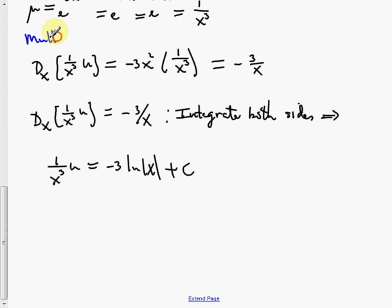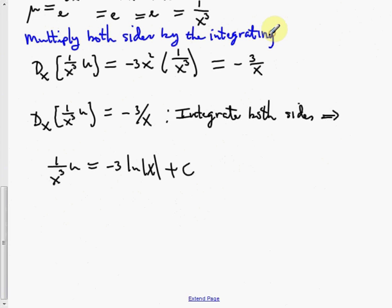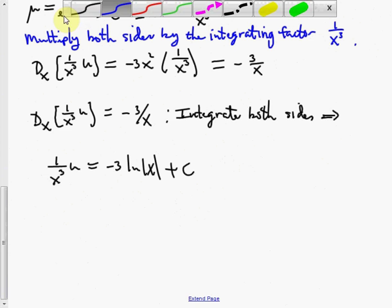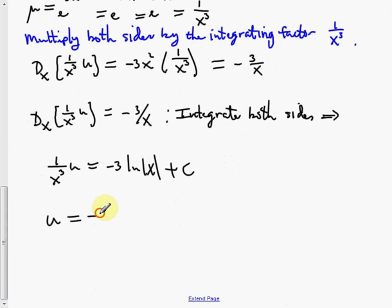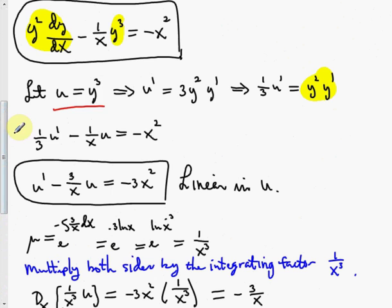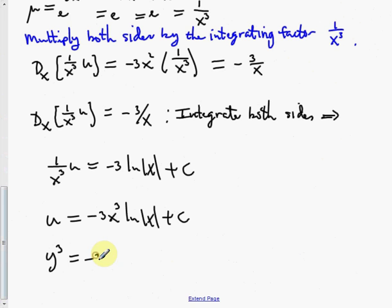So the equation becomes: the derivative of (1/x cubed times u) equals negative 3/x. Integrating both sides: (1/x cubed) times u equals negative 3 times the natural log of the absolute value of x plus some constant C. Multiplying everything by x cubed: u equals negative 3x cubed times the natural log of the absolute value of x plus C times x cubed. Since u equals y to the third, replace u: y to the third equals negative 3x cubed times ln|x| plus Cx cubed.